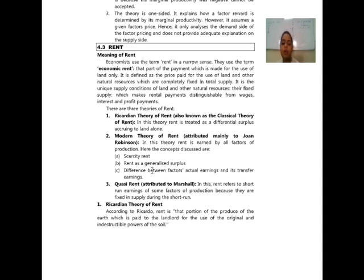There are three theories of rent. First, the Ricardian theory of rent, also known as the classical theory of rent, in which rent is treated as a differential surplus accruing to land alone. Second, the modern theory of rent, attributed mainly to Joan Robinson, in which rent is earned by all factors of production. Concepts discussed include scarcity rent and rent as a generalized surplus.